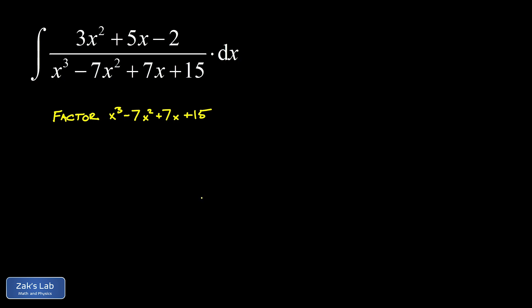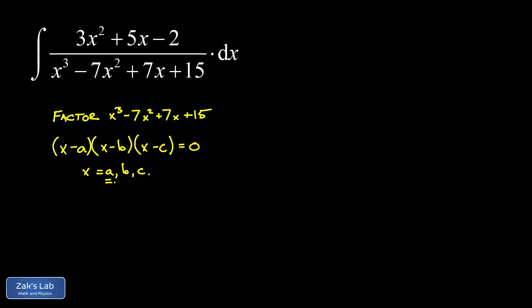Just a rough sketch of the factor theorem: suppose this cubic polynomial factors into three linear factors — x minus a, x minus b, and x minus c. It's clear in factored form that the polynomial equals zero when x is a, b, or c. But this works the other way too: if we can find a root, say a, then x minus a is a factor.